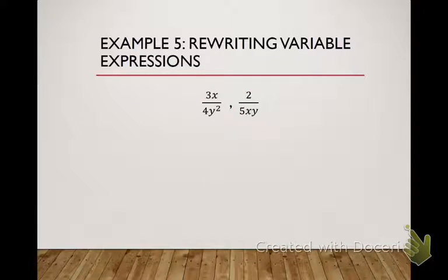All right, here's our second one. So here we have 4Y squared in one denominator, and 5XY in the other denominator. I have to find my LCD. This is not as simple as, oh, well, I have 3 and 4, and my LCD is 12, and I can count my multiples.